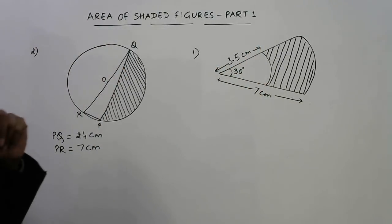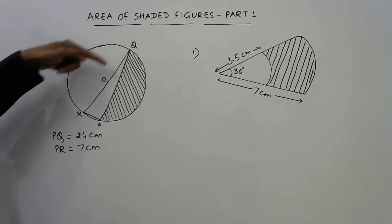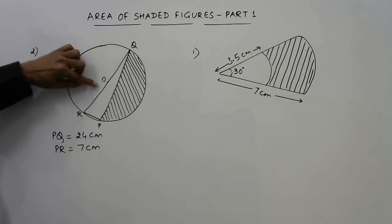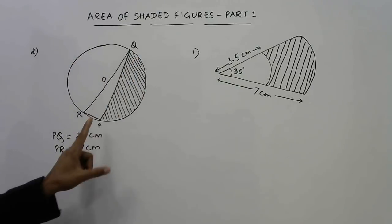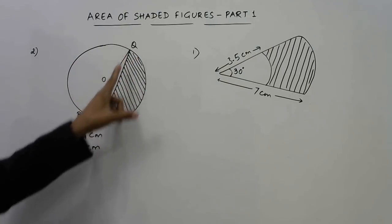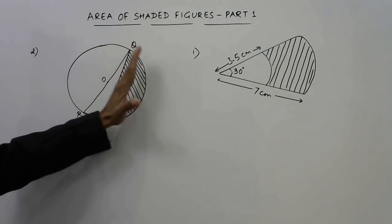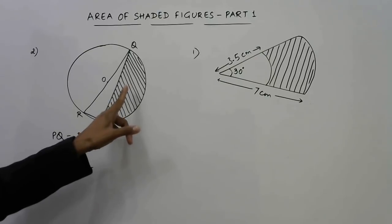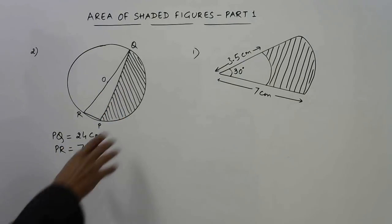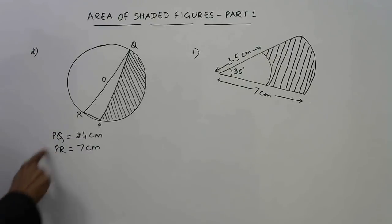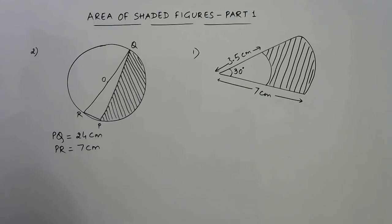In this second figure we have a circle in which QR is the diameter since it passes through the center. We have point P on this semicircle, and R is joined to P and Q is joined to P, and we have to find the area of the shaded segment. In the second question, PQ is given as 24 cm and PR is given as 7 cm.